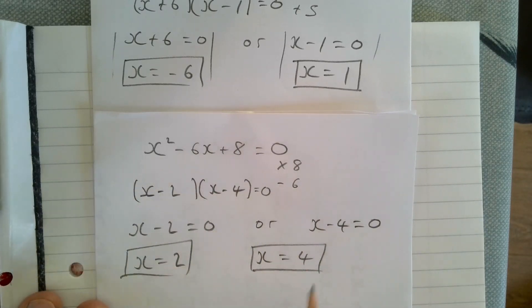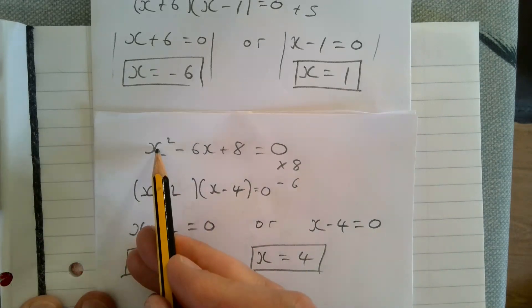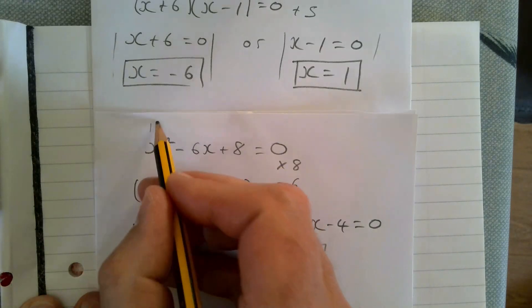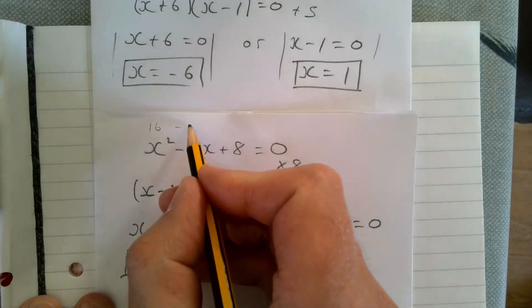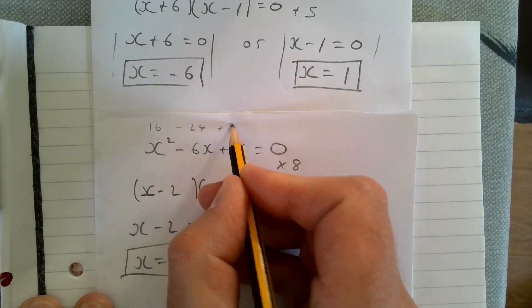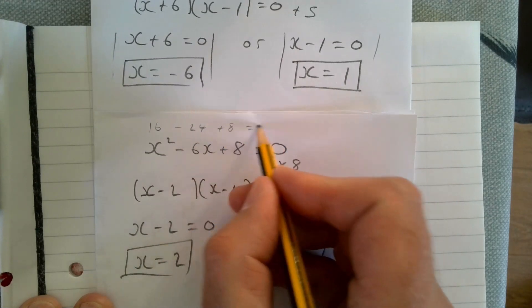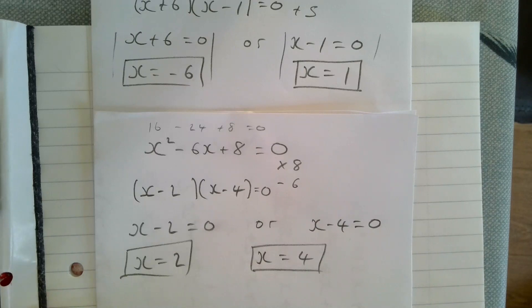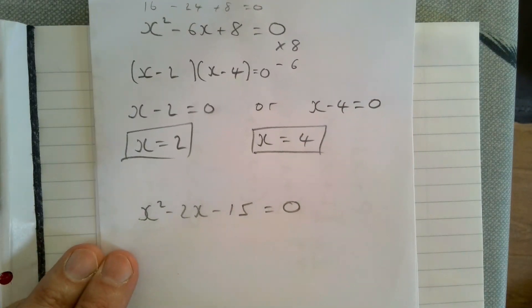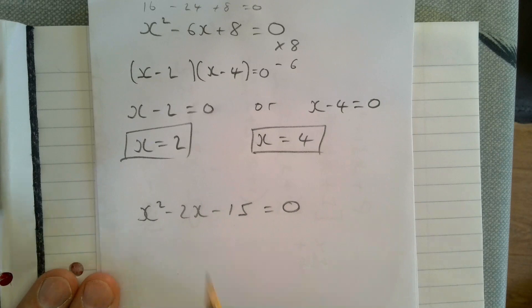Let's try one to make sure this works. We're going to try the number four. Four squared gives us 16, take away six times four, so that's minus 24, plus eight—and that does indeed equal zero. So four does work. If you try it with two, it'll work as well. There's no other numbers that would work.